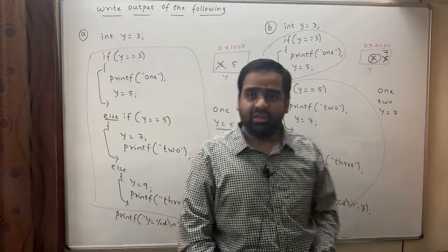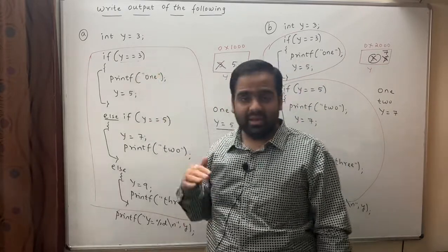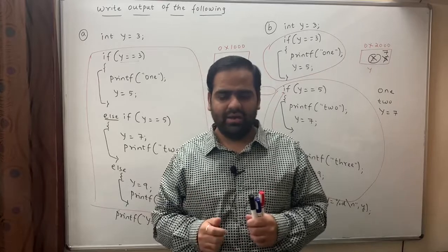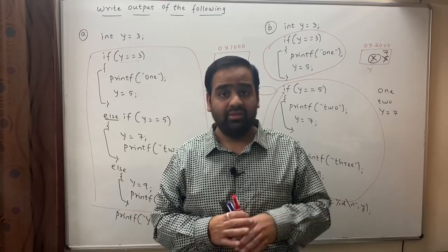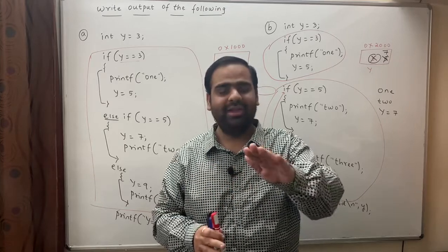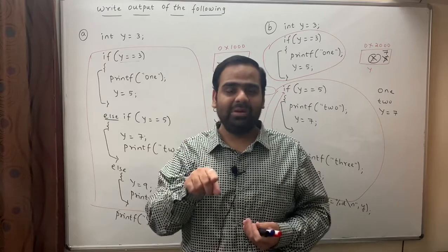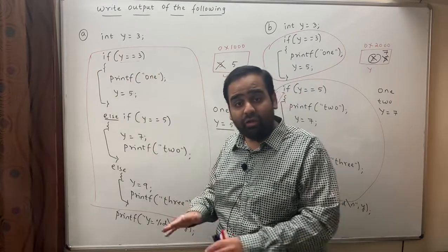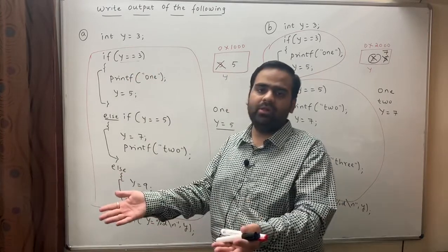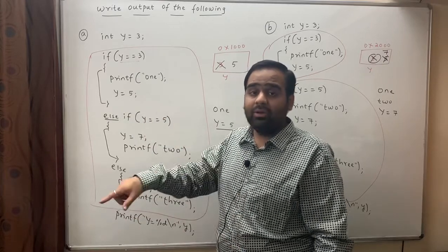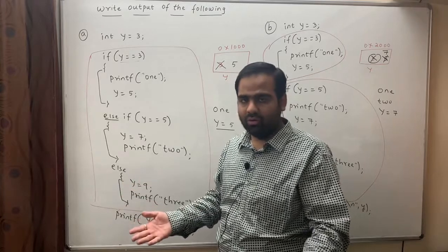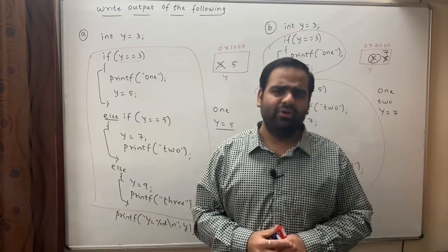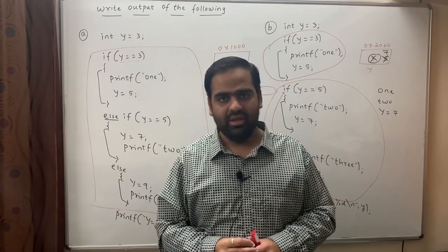I hope you've understood the difference between the else-if ladder and writing only if and if-else. Now the question is: why is it called a ladder? Because first you check condition 1 — it's like a ladder and you want to reach the top. You take the first step and see if you've reached the top. If yes, you won't take the second step. If you are unable to reach the top, you take the second step, and so on. Similarly, if you satisfy condition 1, you stop the else-if ladder. If not, you check the second condition. Therefore, it is called an else-if ladder.